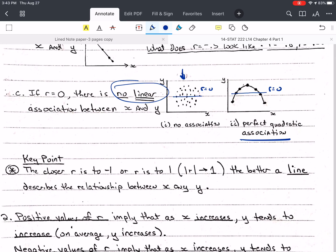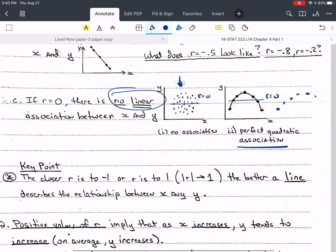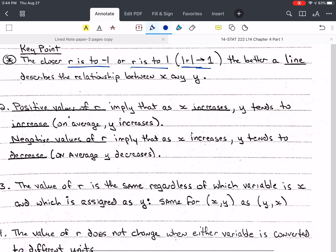Key point. But you'll notice if we had something like this, which would be part of a parabola but not the whole thing, then you'd still be able to put a line through there, but it wouldn't be the best shape to have for this. There's other analyses that we can use if it's not a straight line. We won't learn those in this course, but you need to know that they're out there. Again, the closer r is to negative 1 or r is to positive 1, in other words, the absolute value of r as it gets closer to 1, the better a line describes the relationship between x and y.